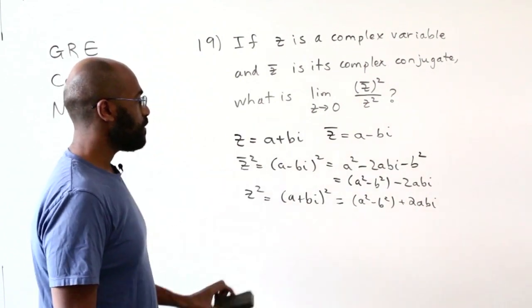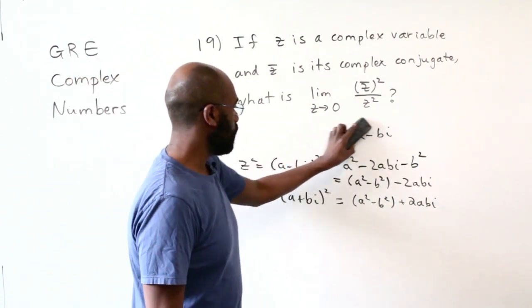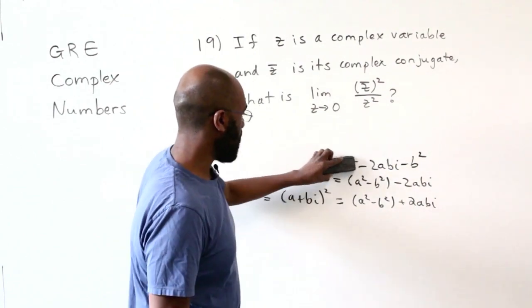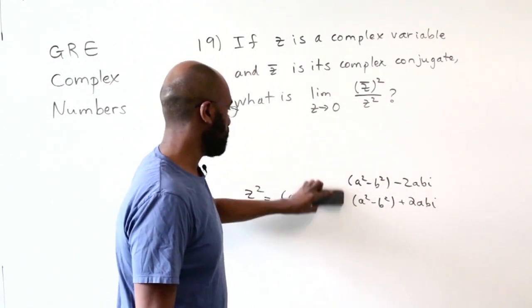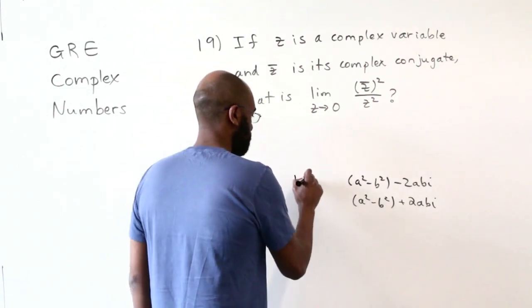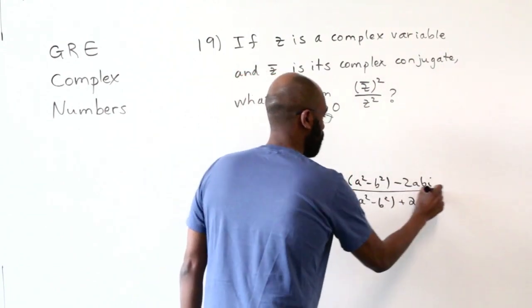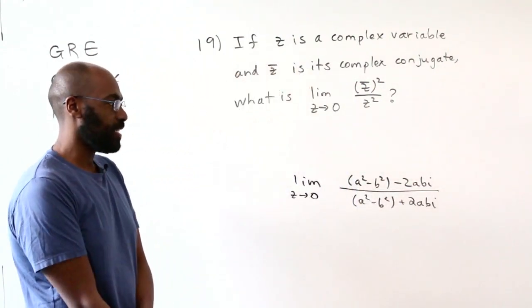We can rewrite our limit as the limit of the quotient of these two things. So let's go ahead and do that. The limit we're considering is the limit as z approaches 0 of this quantity right over here, where z is a plus bi.